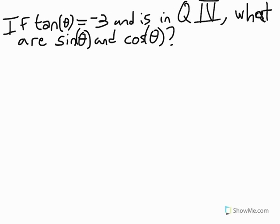Hey scholars, how's it going? So, in this question, we're going to try to find sine and cosine from tangent. We're given the tangent of some angle theta is negative 3, and that this angle is in quadrant IV.